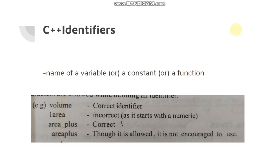This is an example. The volume, that is a correct identifier. And one area, that is incorrect, because it starts with a numeric. And area_plus, that is also correct. Underscore is a special character but it is allowed for better readability. And area plus, though it is allowed, it is not encouraged to use.